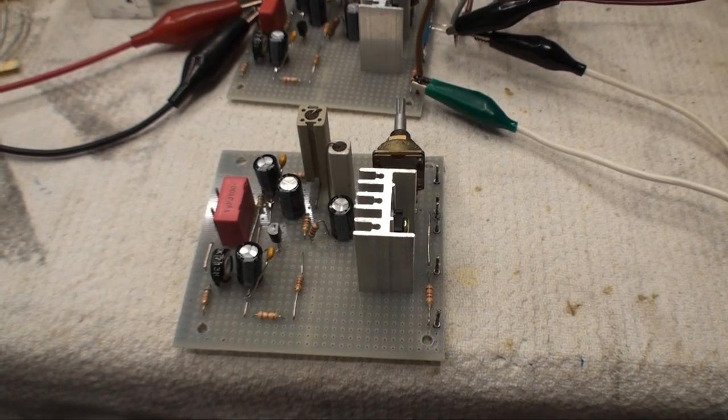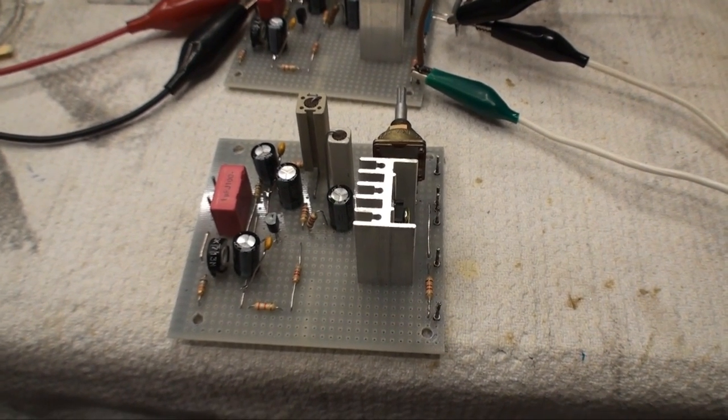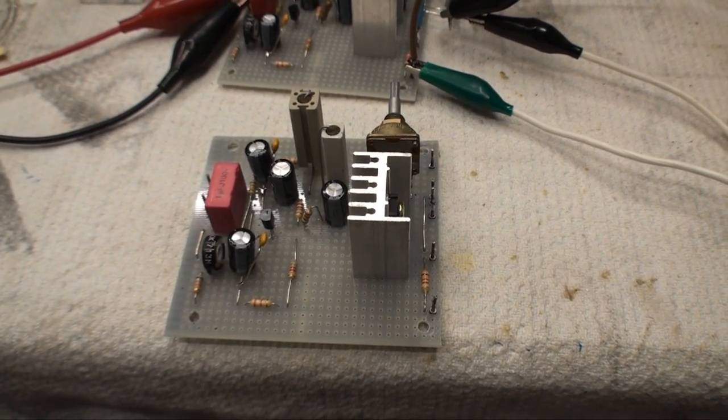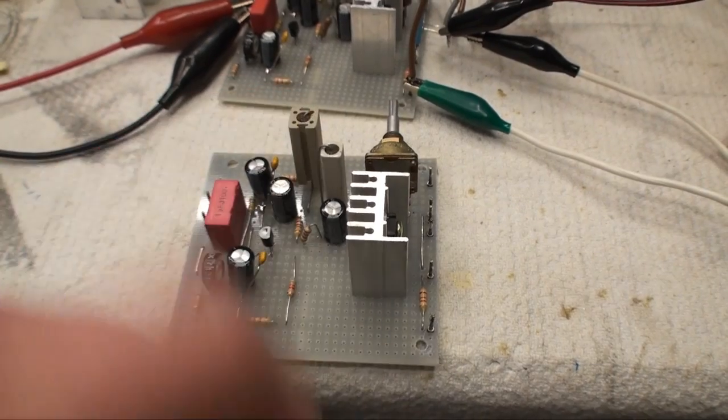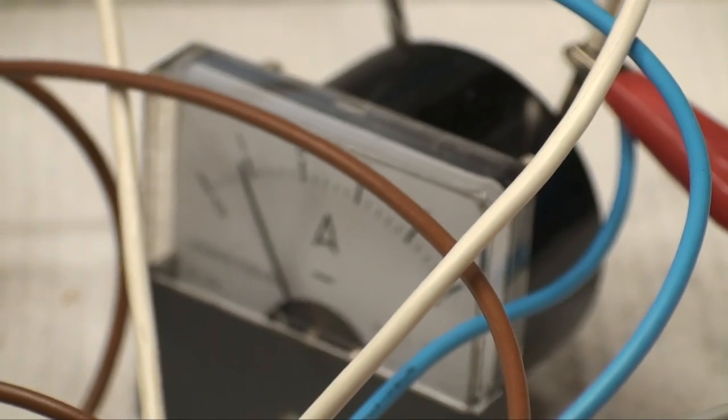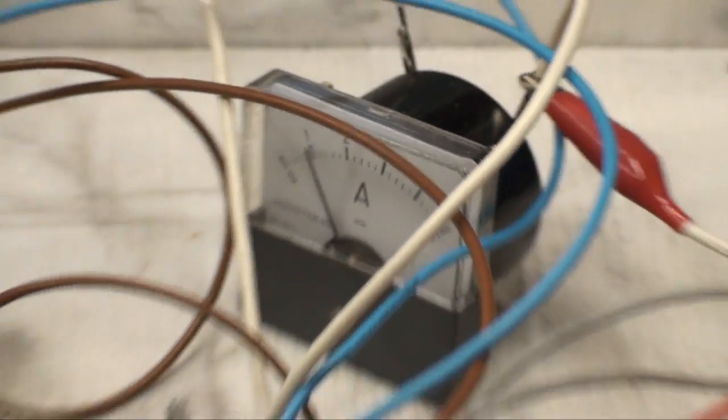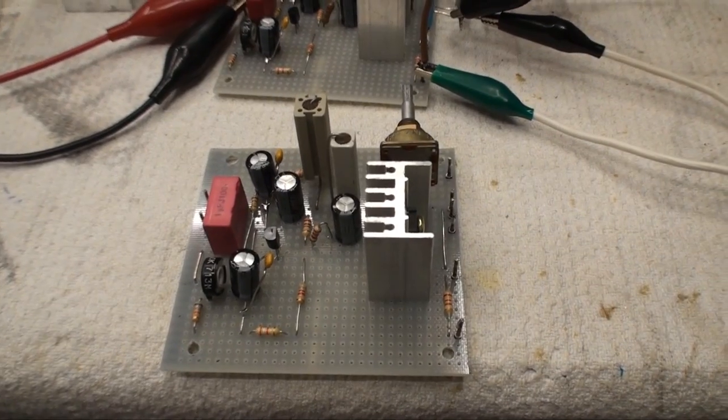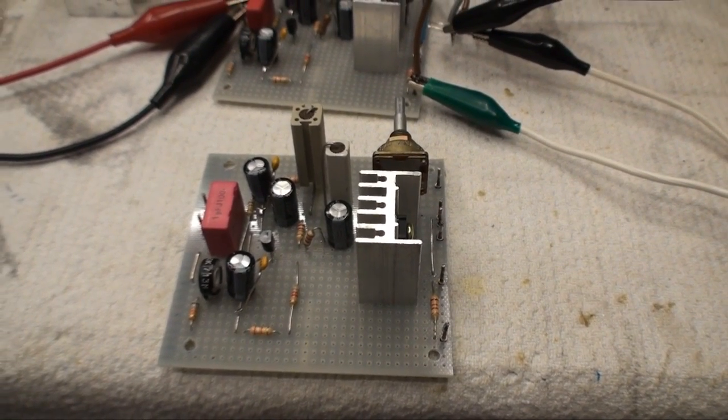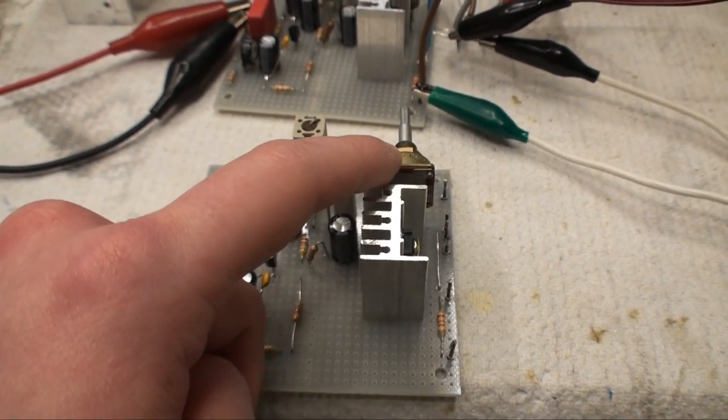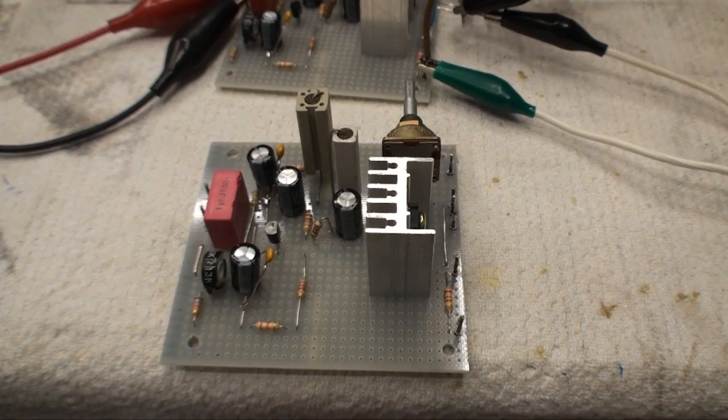The thing is, the entire base current of the output transistors flows through these three components and I got it adjusted for one amp of collector current. Since the current amplification of these two 2N3055 transistors is more on the low side, there is quite a significant current going through these components into the bases of the output transistors.